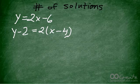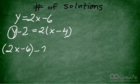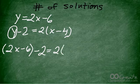I'm going to take this 2x minus 6, and I'm going to substitute it for this y right here. So when I do that, I'm going to have 2x minus 6, which is y, minus 2 equals 2 times the quantity x minus 4.